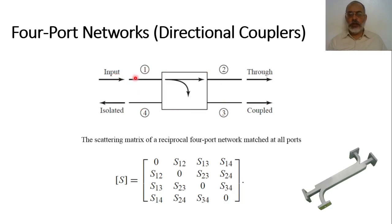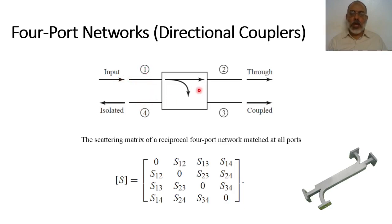Port 1 is the input, Port 2 is the through, Port 3 is the coupled signal from the forward direction, and Port 4 is the coupled signal from the reflected direction. Port 4 is isolated with respect to the input, meaning there is no power going directly from Port 1 to Port 4, and no power going directly from Port 2 to Port 3.